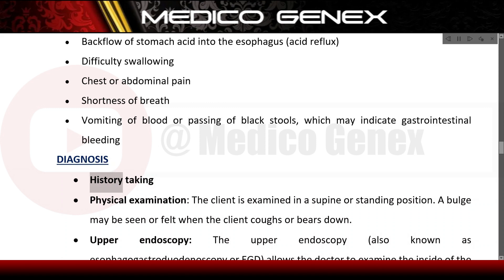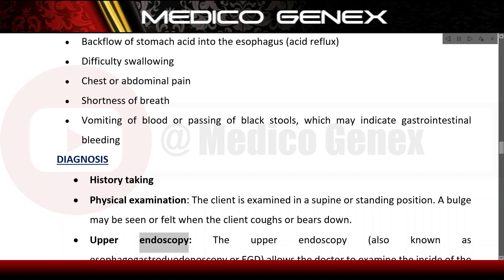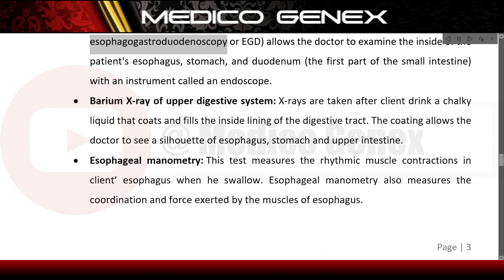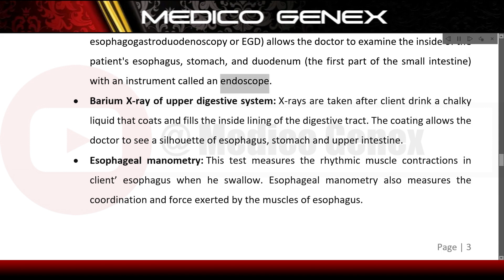Diagnosis includes history taking and physical examination. The client is examined in a supine or standing position; a bulge may be seen or felt when the client coughs or bears down. Upper endoscopy, also known as esophagogastroduodenoscopy (EGD), allows the doctor to examine the inside of the patient's esophagus, stomach, and duodenum — the first part of the small intestine — with an instrument called an endoscope.